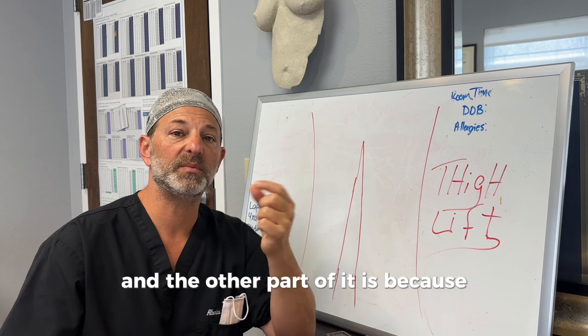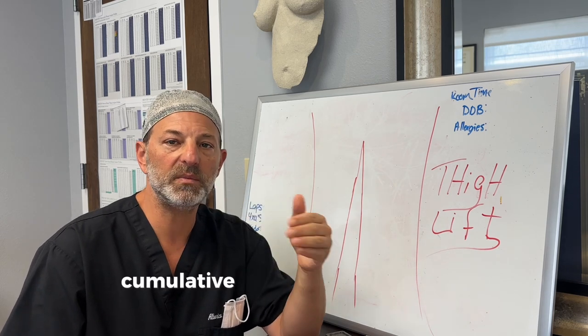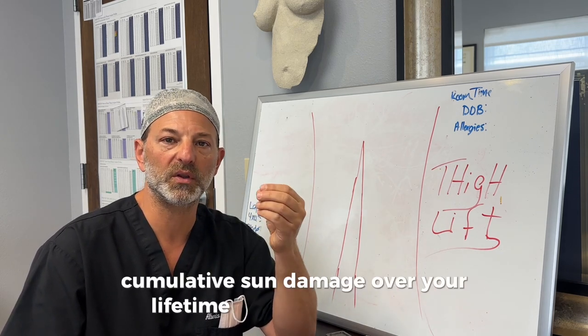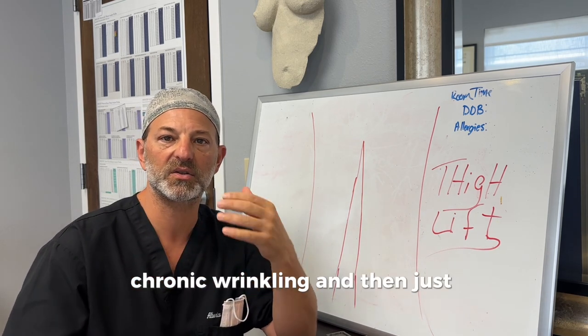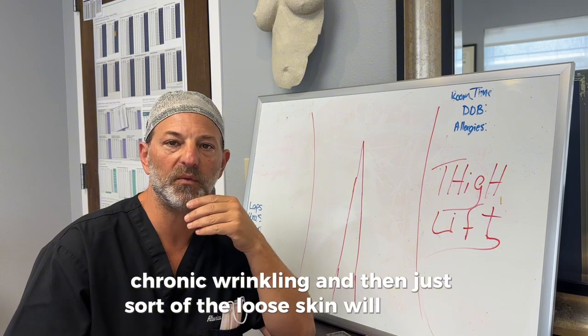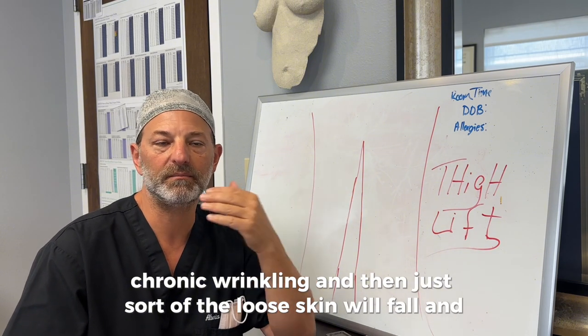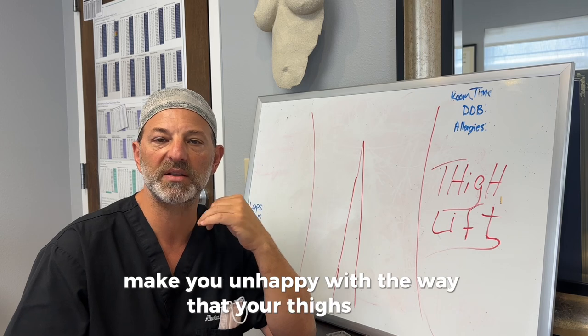And the other part of it is because it's so thin, cumulative sun damage over your lifetime will lead to wrinkles, chronic wrinkling, and then just sort of the loose skin will fall and make you unhappy with the way that your thighs look.